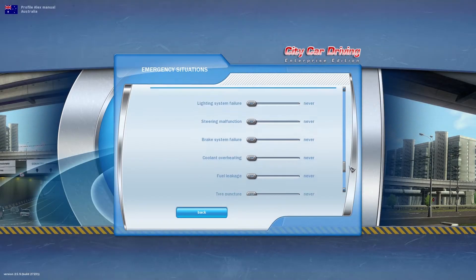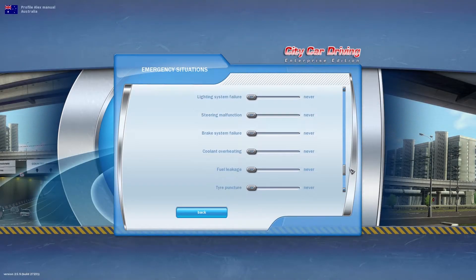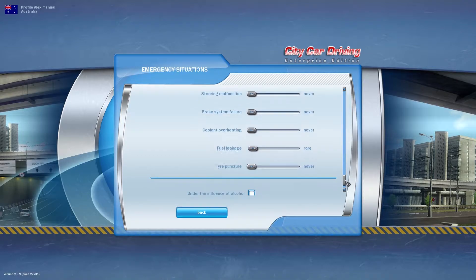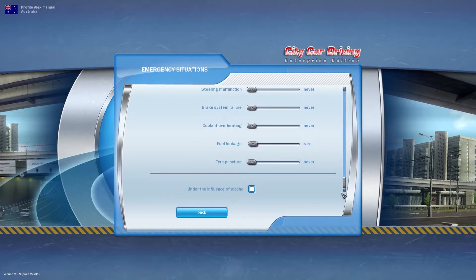The software allows the instructor to turn on a range of different mechanical faults to test the driver and provide experience dealing with such hazards. This can include overheating, a brake system failure, a power steering failure, a flat tyre, and running out of fuel.